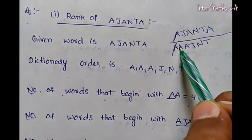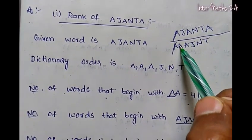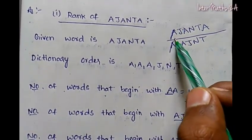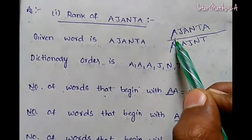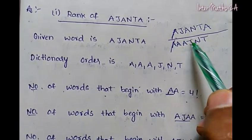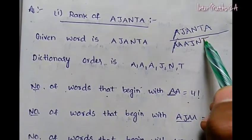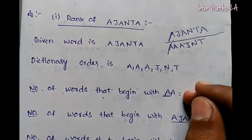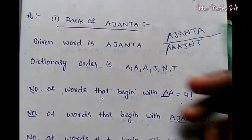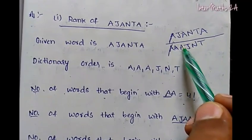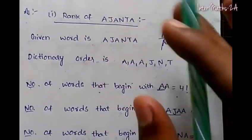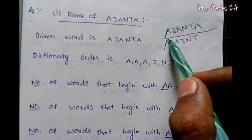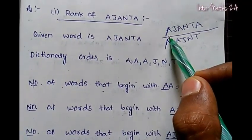The next letter in dictionary order is also A, so A is cancelled. A comes before J, so we count words starting with A again. We have four remaining letters, giving 4 factorial. Next is the letter before J — if we say the next prefix, we have 3 letters and 4 factorial.